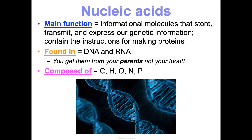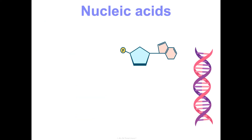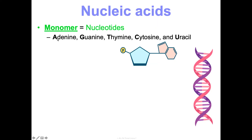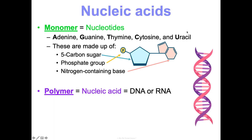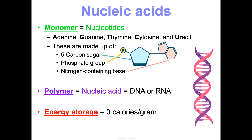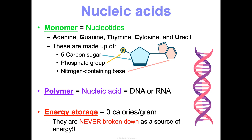Nucleic acids are composed of carbon, hydrogen, oxygen, nitrogen, and phosphorus — everything but sulfur. The monomer is a nucleotide. There are five nucleotides: adenine, guanine, thymine, cytosine, and uracil — often referred to as A, G, T, C, and U. Each nucleotide has three components: a five-carbon sugar (either deoxyribose or ribose), a phosphate group, and a nitrogenous base, which determines whether it's the A, G, T, C, or U. The polymer is simply a nucleic acid — either DNA, which is a double helix, or RNA, which is a single strand. Energy storage is zero — we never break nucleic acids down as an energy source.